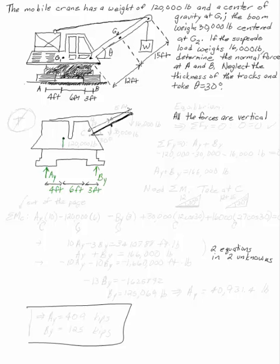We've got AY and BY acting at those points. You've also got on your free body diagram the weight of the crane itself, 120,000 pounds, the weight of the boom, 30,000 pounds, and the weight of the load at 16,000 pounds.